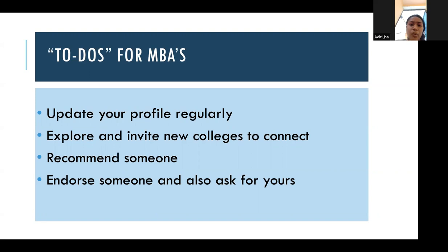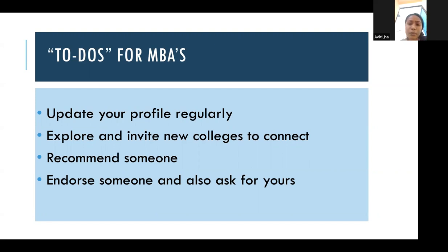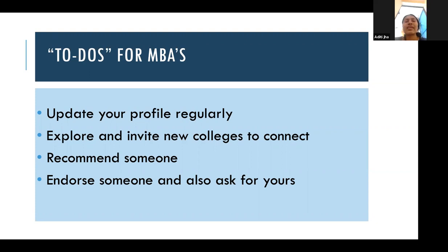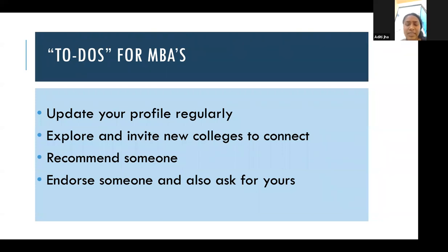Here is a to-do list for MBA students. First and most important: update your profile regularly. To get a job or internship, you need to be active on LinkedIn so people can see and recognize you. Second, explore and invite new colleagues to connect. Third, recommend someone — it's a mutual relationship: if you recommend someone relevant for a job, they will also consider recommending you. Fourth, endorse someone and ask for endorsements in return — there is no shame in asking for endorsements.